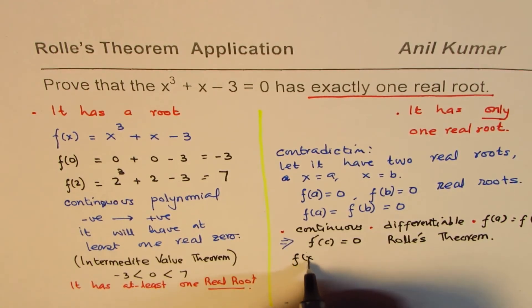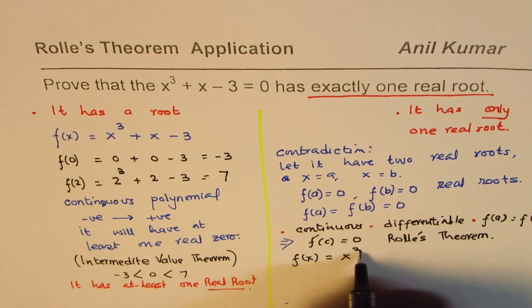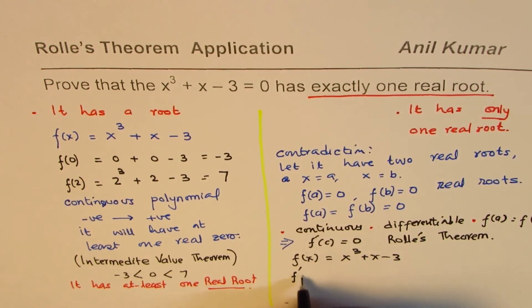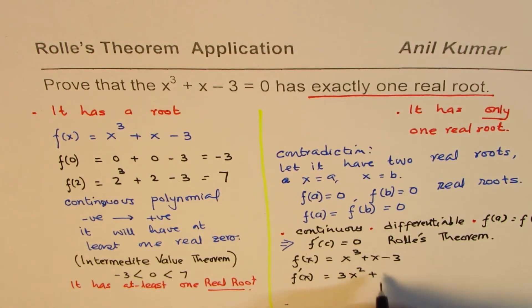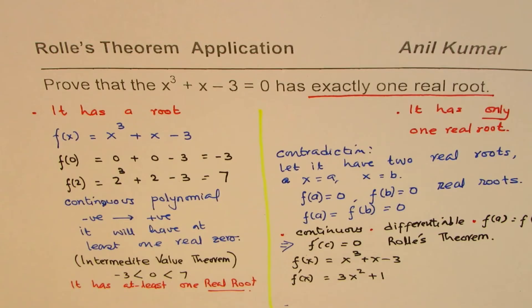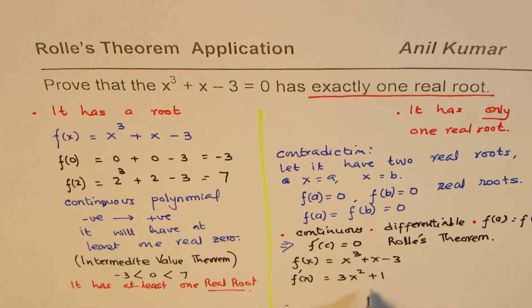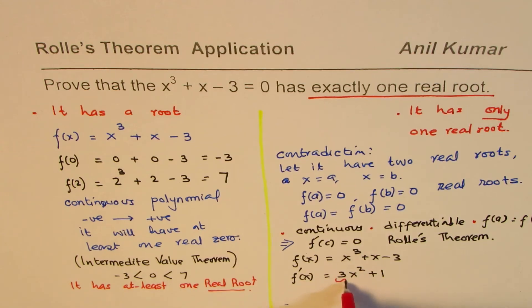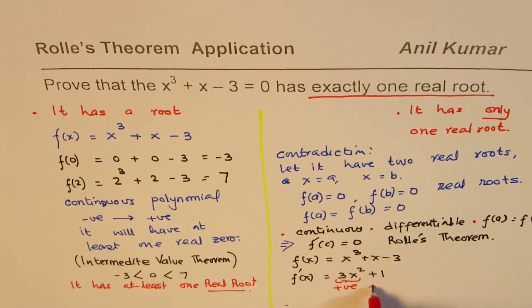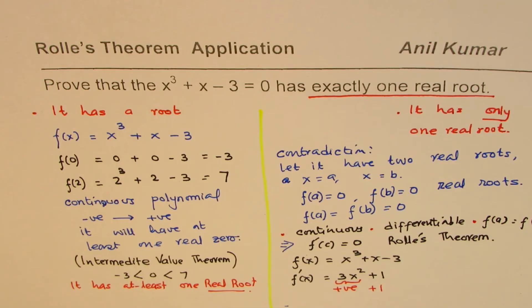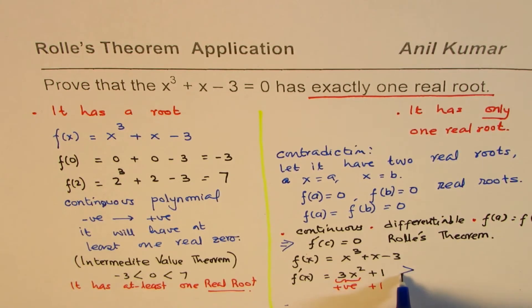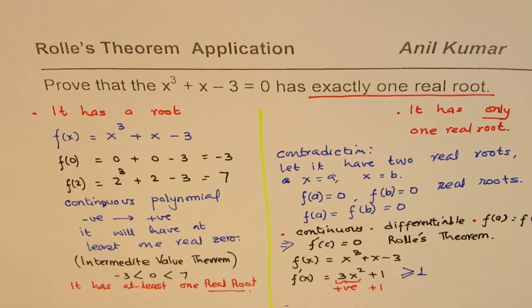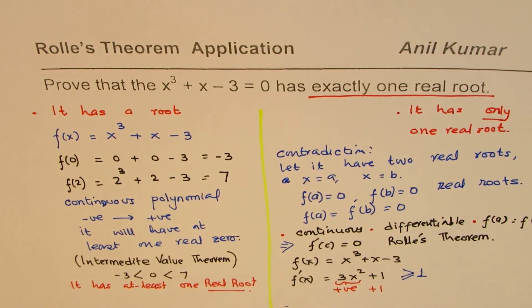So we are given f of x equals to x cube plus x minus 3. F prime x, the derivative will be 3x square plus 1. Now, as you see this, 3x square plus 1. Now, this term is always positive. 3x square is always positive. And we are adding 1 to it. So we know that this function is never going to be 0. It is always greater than or equal to 1.